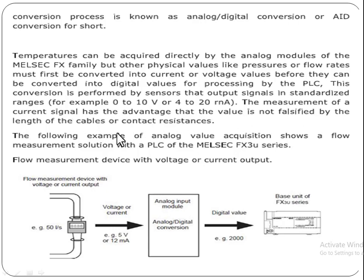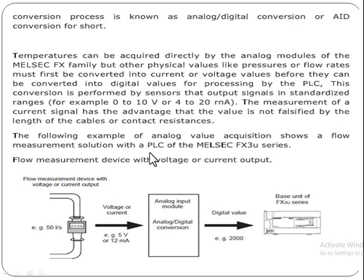The measurement of a current signal has the advantage that the value is not falsified by the length of the cables or contact resistances. This means the current signal is not affected by cable length.